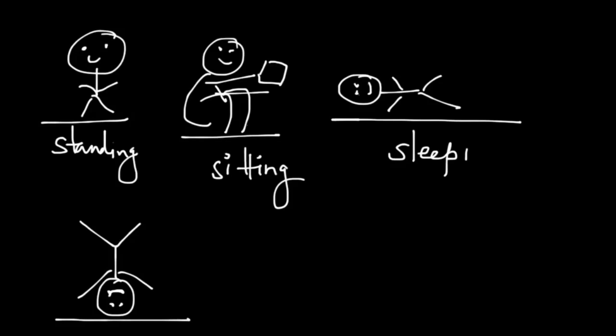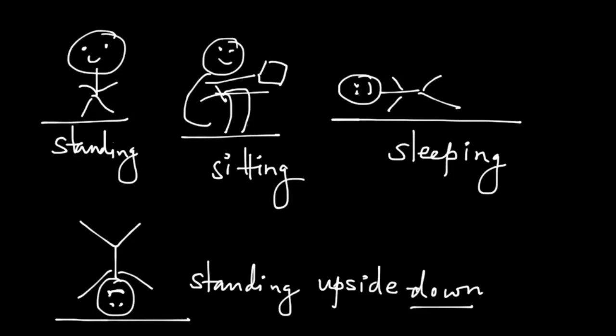In this diagram here, Bob is doing something extraordinary—he is standing upside down. Now, what does this have to do with conformers? Well, all of these are different positions Bob takes throughout the day.